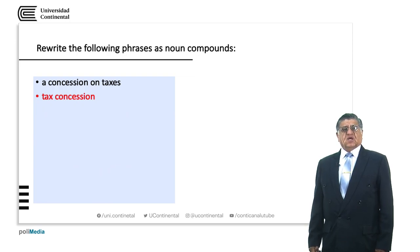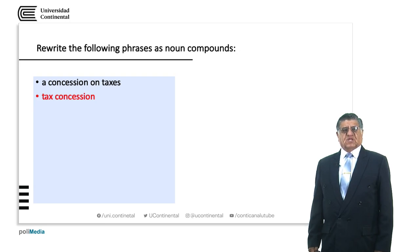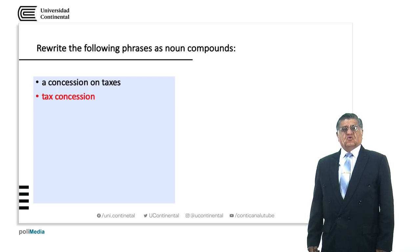Another thing I would like to emphasize is that when we form plurals from a noun compound — in this case, for example, 'tax concession' — we only pluralize 'concessions', the second word: 'tax concessions'.